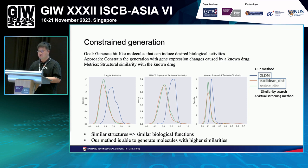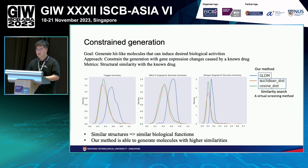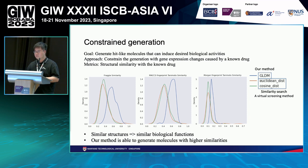After the unconstrained generation, we evaluate if the generated molecules can actually be hit candidates that induce the desired biological activities. We constrain the generation with the gene expression changes caused by a known drug. In practice, we generate 100 molecules for each gene expression profile. Since similar structures indicate similar biological functions, we assess the structural similarity between the generated molecules and the known drugs. We use Tanimoto similarity based on ECFP/Morgan fingerprints to evaluate the experiments. We also compare our method with similarity search, which is a virtual screening method. On all three measurements, our method — the blue curve — is able to generate molecules with higher similarities than the baseline method.